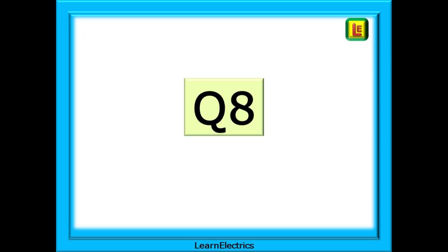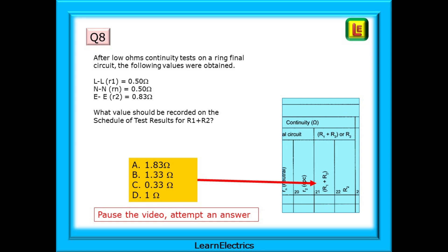And finally question number eight. After low ohms continuity tests on a ring final circuit the following values as shown were obtained. What value should be recorded on the schedule of test results for R1 plus R2? You have four values to choose from. Pause the video and attempt an answer.